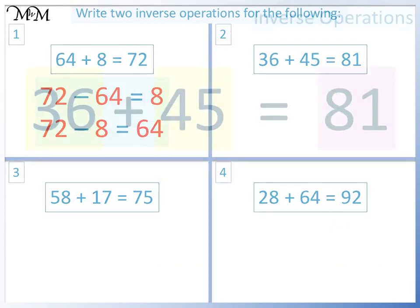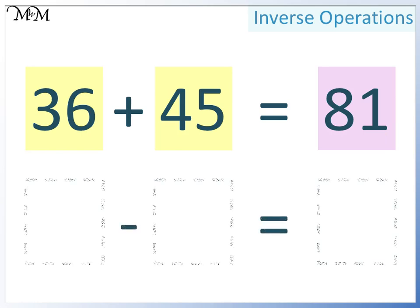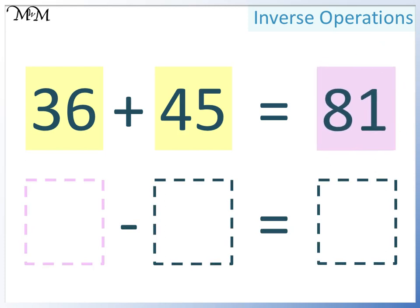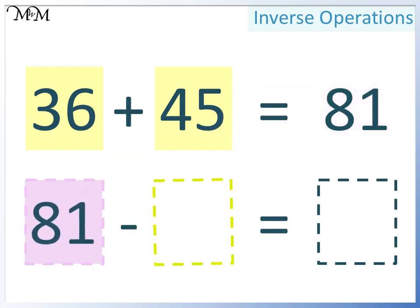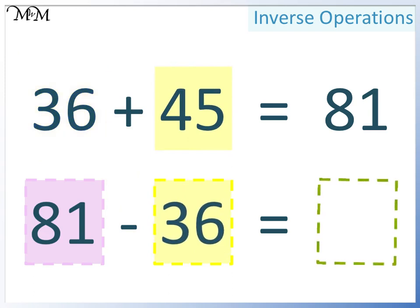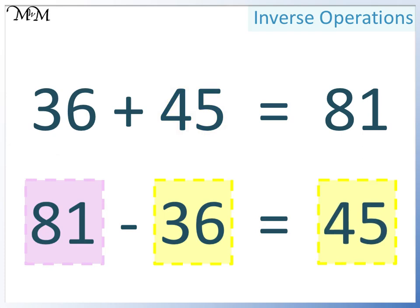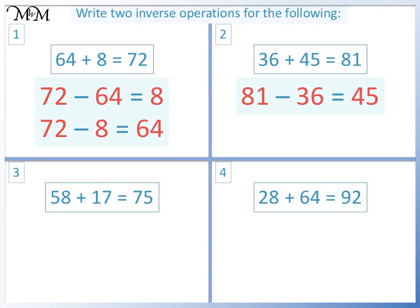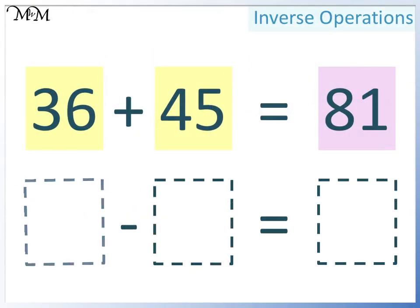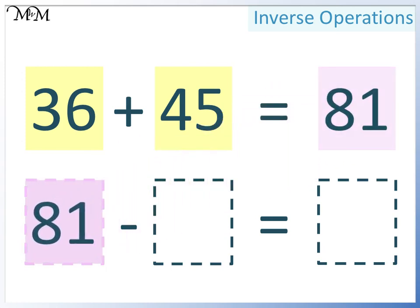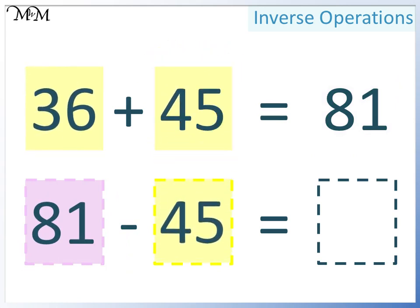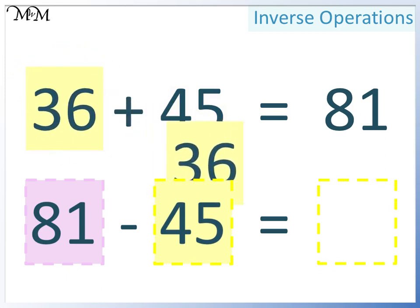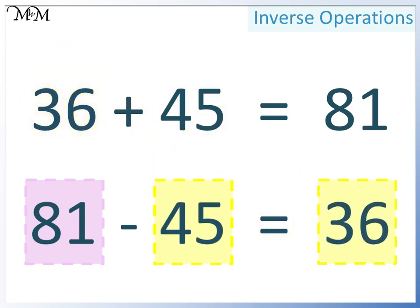Question 2: 36 add 45 equals 81. 81 is the largest number so it will go at the start. We can write either 36 or 45 next. This time we'll have 36, and so in the final space we'll have 45. 81 take away 36 equals 45. Alternatively, we can have 81 in the first space. In the next space we'll have 45, and in the final space we'll have 36. 81 take away 45 equals 36.